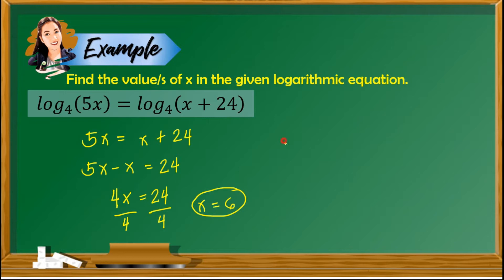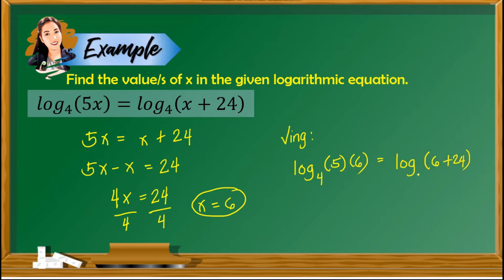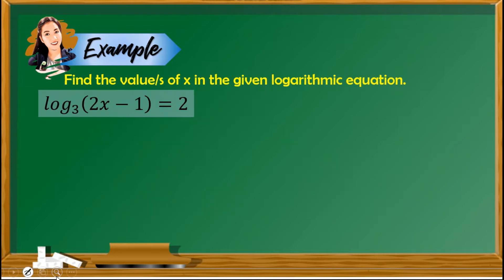Next step is to do the checking. We plug in the value of 6 to our equation: logarithm of 5 times 6 with base 4 equals logarithm of 6 plus 24 with base 4. This gives us logarithm of 30 with base 4 is equal to logarithm of 30 with base 4. Since the left equals the right, x equals 6 is the answer to this equation.